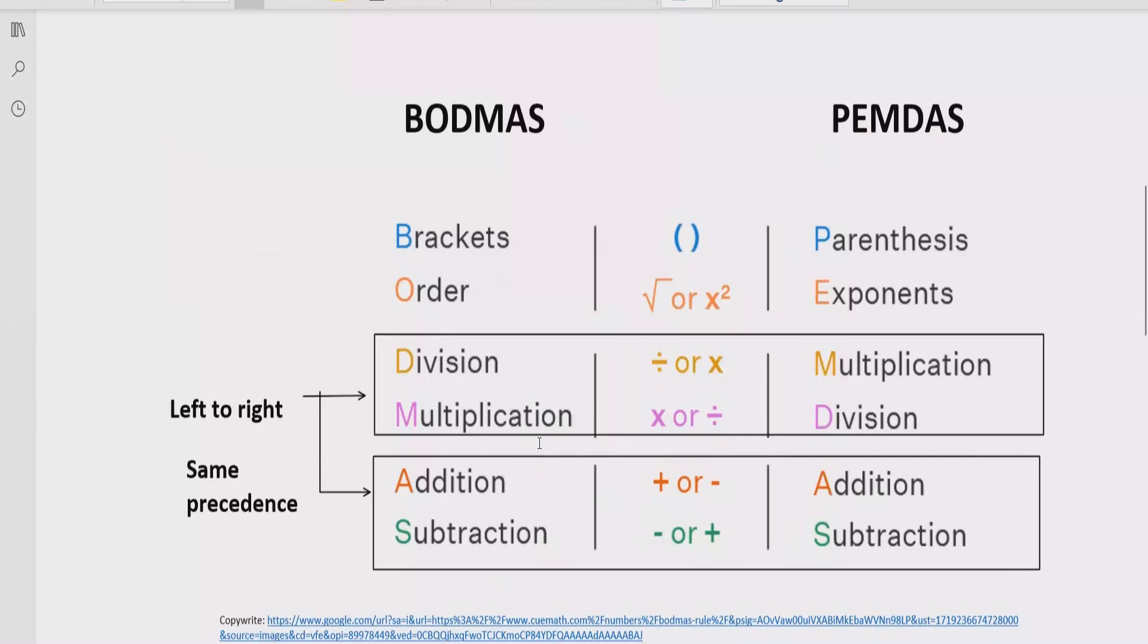The rule says if your expression contains any bracket or parentheses, you have to solve that part first in your expression. After the bracket, you have to see the exponent or power of any number. If your expression contains any number which has a power, you have to solve that part after the bracket.